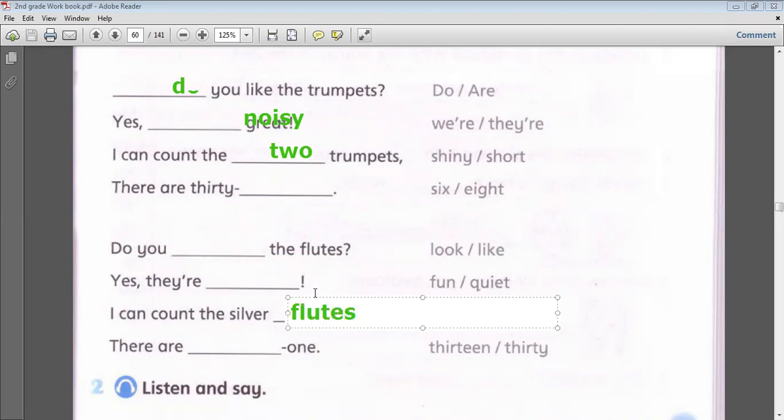Now the last line. There are 13-1 or 31. Of course there is no number like 13-1, so here we have to write 31.